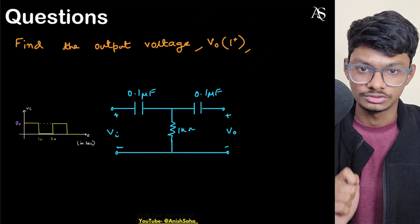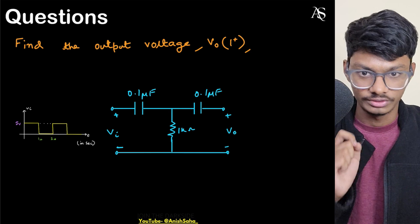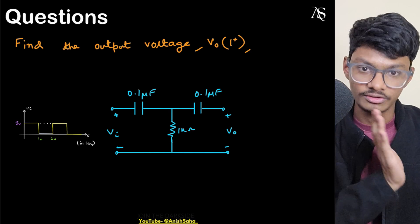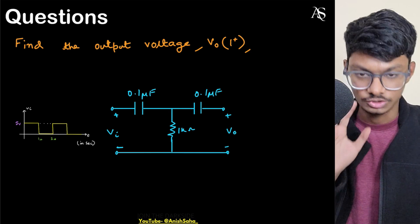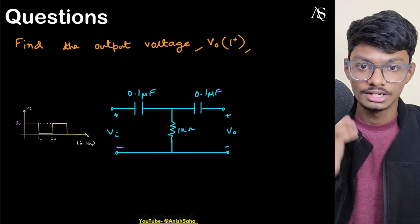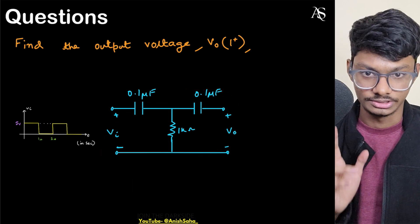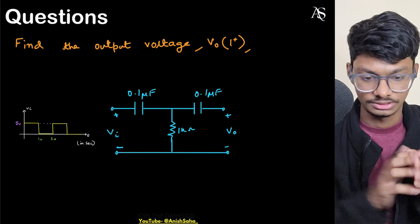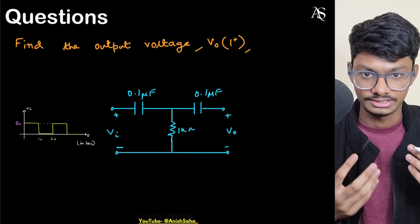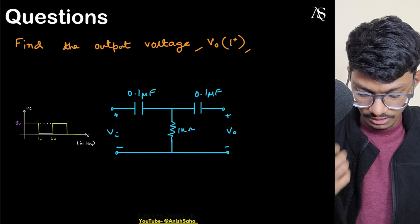We need to find the output voltage at t equals one second — just after t equals one second. At first glance this looks like a second-order circuit, but is it really a second-order circuit? Let's try to understand that.